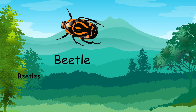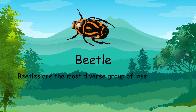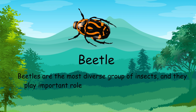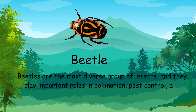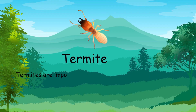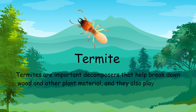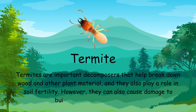Beetles are the most diverse group of insects, and they play important roles in pollination, pest control, and nutrient cycling. Termites are important decomposers that help break down wood and other plant material, and they also play a role in soil fertility.